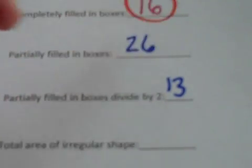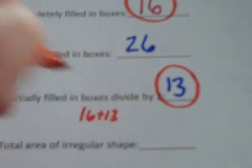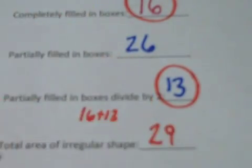The last thing I want to do now is use this information to find the total area of the irregular shape. So what we're going to do is we're going to work with the 16 completely filled in boxes, and the 13 partially filled in boxes, and ask ourselves, what is 16 plus 13? It's 29.